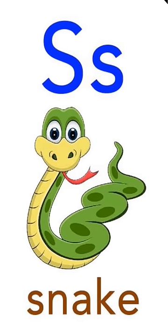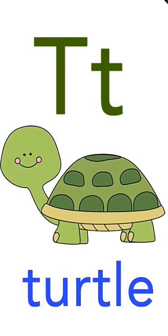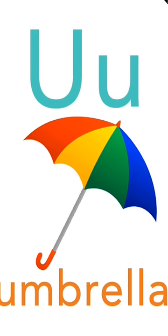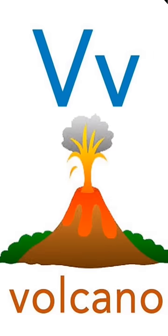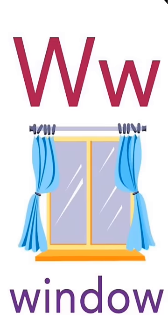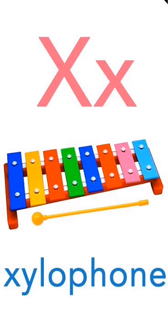S for snake. T for turtle. U for umbrella. V for volcano. W for window. X for xylophone.